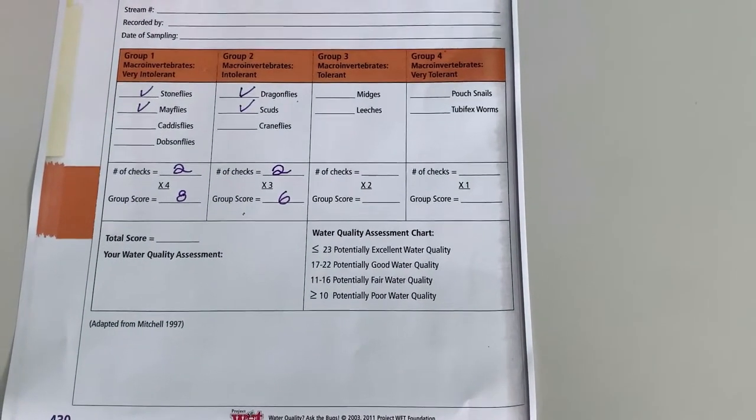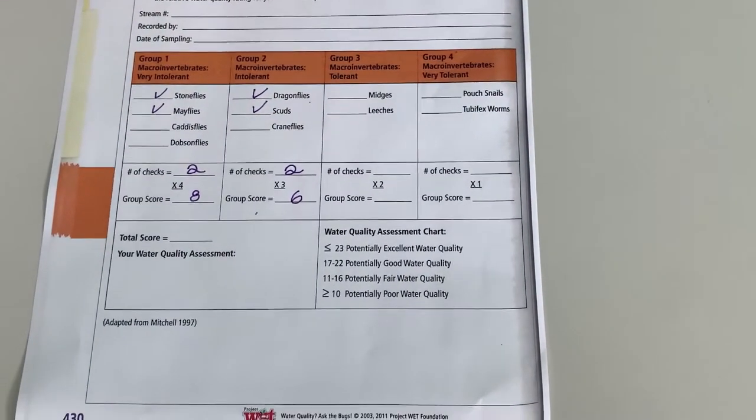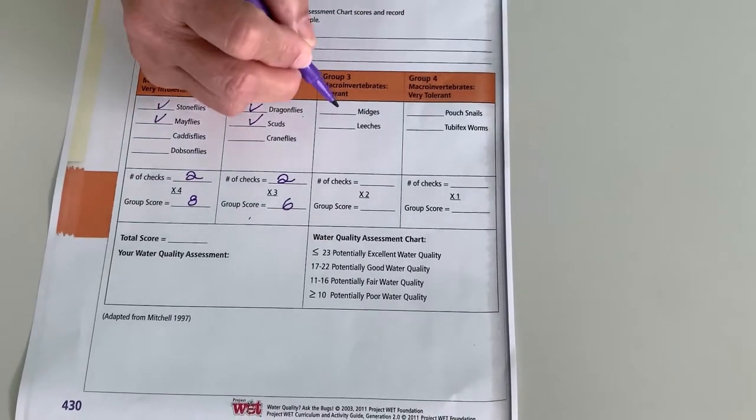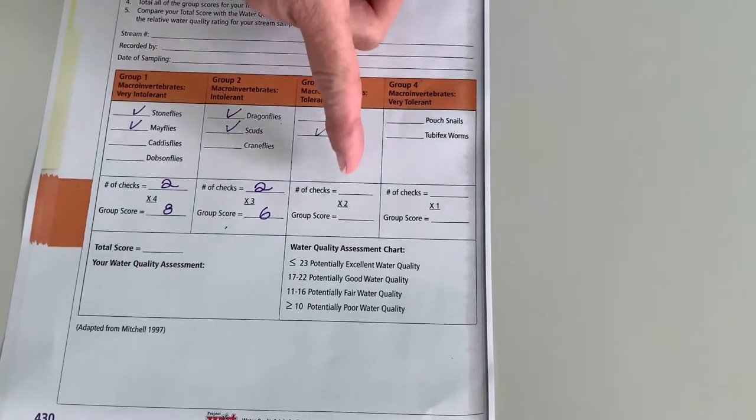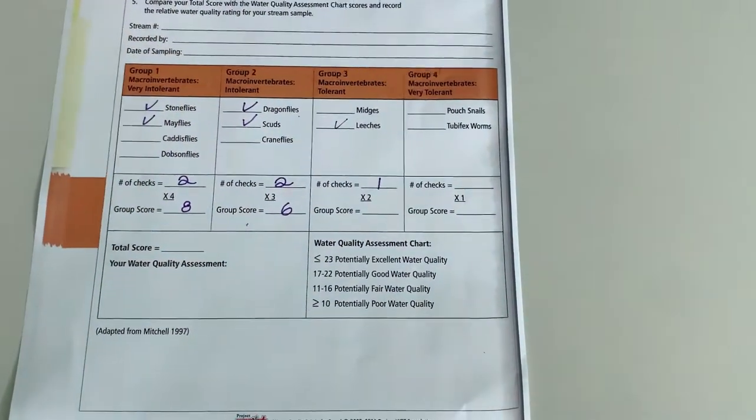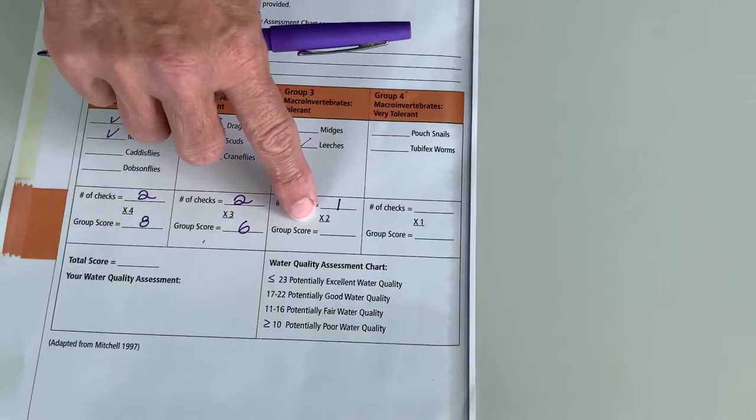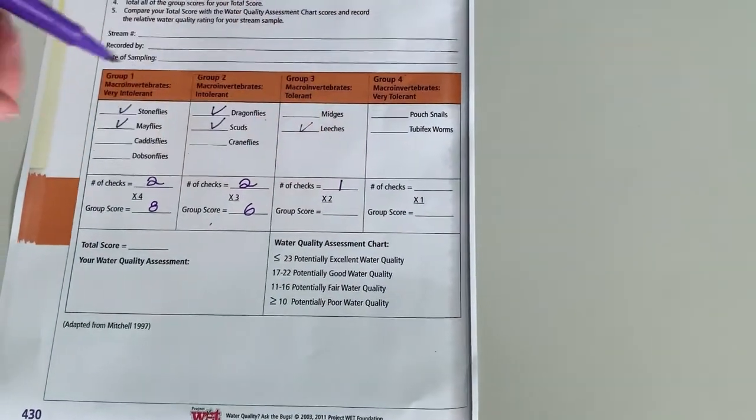Then we'll move to group 3, midges or leeches. Let's say we found lots of leeches today. So we only found one thing. So our number of checks here is only a 1. Our weighting factor is 2. 2 times 1 is 2.